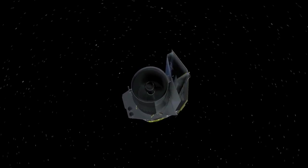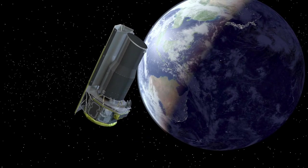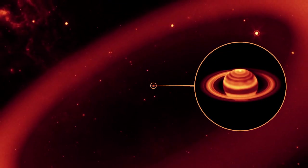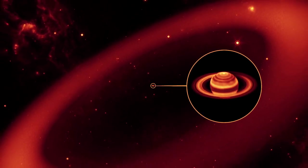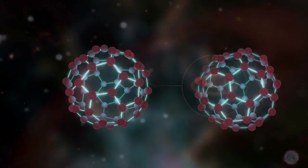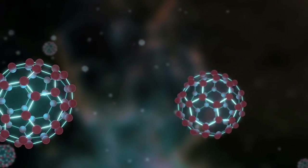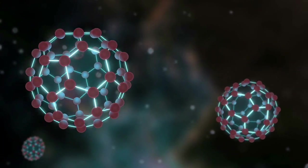Shortly after launch, Spitzer began its rich history of surprising revelations within our solar system and beyond. It discovered Saturn's largest ring, one seen only in infrared light. It identified buckyballs in space, carbon cages that can trap other small molecules or atoms like tiny time capsules.